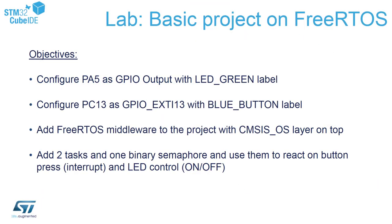The objectives for this part are the following. First we'll configure two IOs: PA5 as a GPIO output to control the green LED, and PC13 as a GPIO EXTI13 to monitor the blue button connected to the port. Then we will add the FreeRTOS middleware to our existing project, and within FreeRTOS I will add two tasks and one binary semaphore controlled by the blue button.